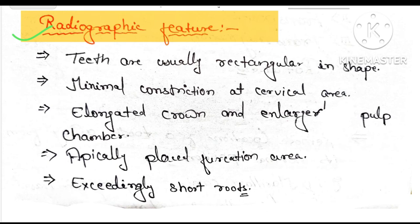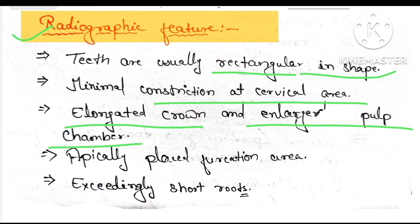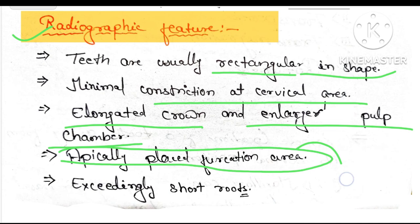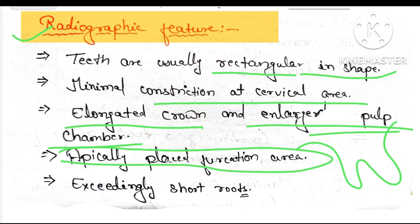Radiographic features: the affected tooth appears rectangular in shape with minimal constriction at the cervical area, elongated crown, and enlarged pulp chamber. The furcation area is placed apically, as shown in the diagram. There are also accidentally short roots.